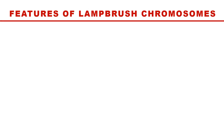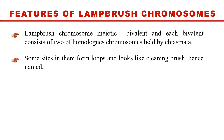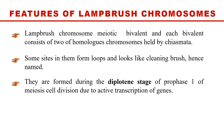The features of lampbrush chromosomes: first, they are meiotic bivalents, and each bivalent consists of two homologous chromosomes. They contain certain loops which look like a cleaning brush — that's why they are named lampbrush chromosomes. They form during the diplotene stage, which is why they are also called diplotene chromosomes.